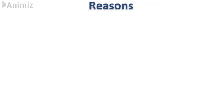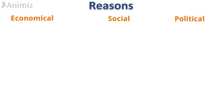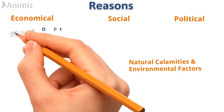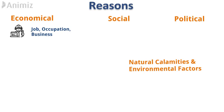In the fourth part, we will learn about reasons of migration. Reasons of migration have been divided into four broad categories: economical reason, social reason, political reason, and natural calamities and environmental factors. Under economic reasons, the first point is job, occupation, and business — it is obvious that a person has to migrate from his or her native place in search of a job, occupation, or business.